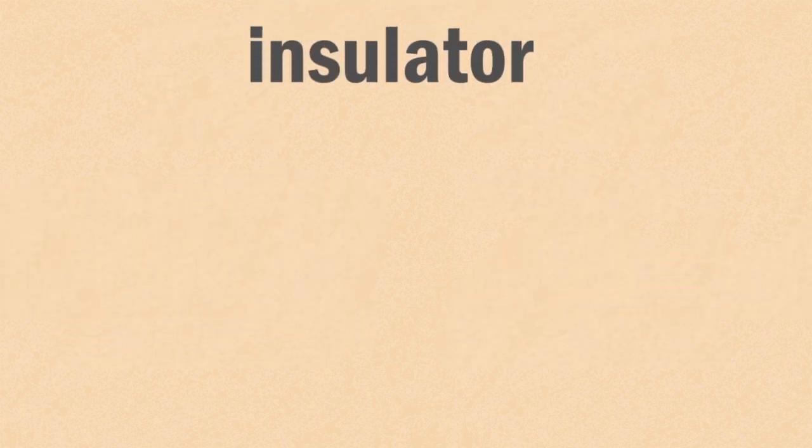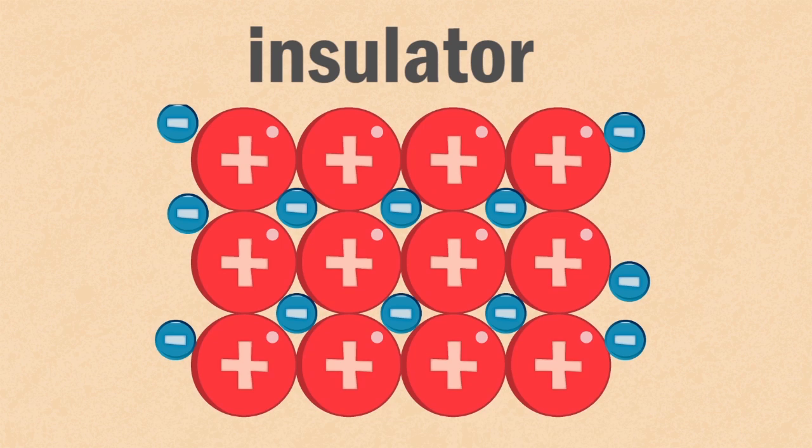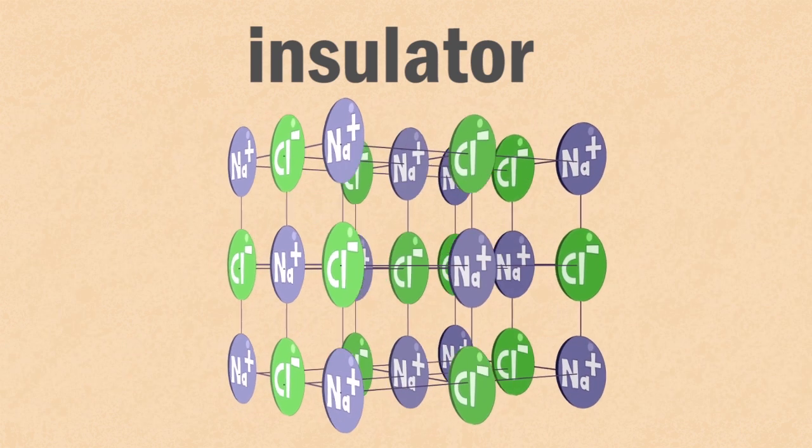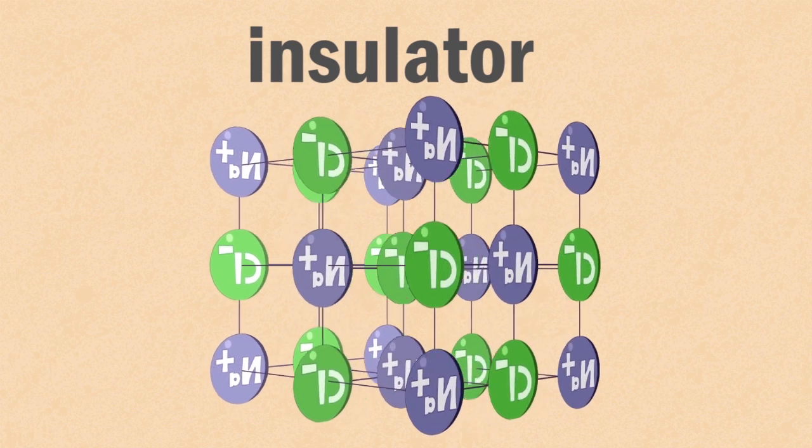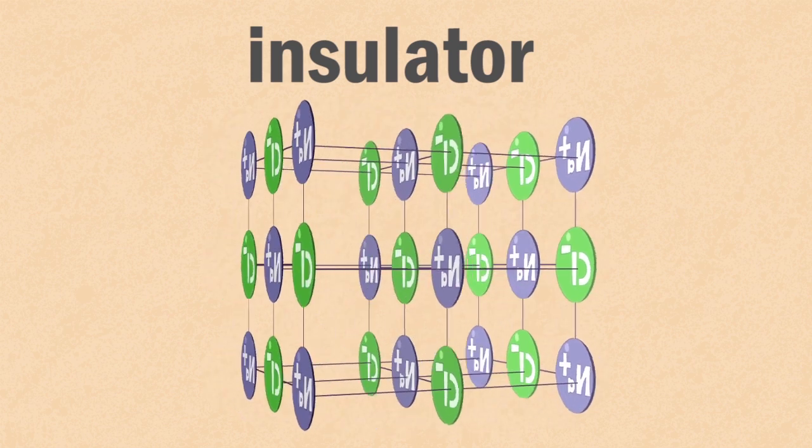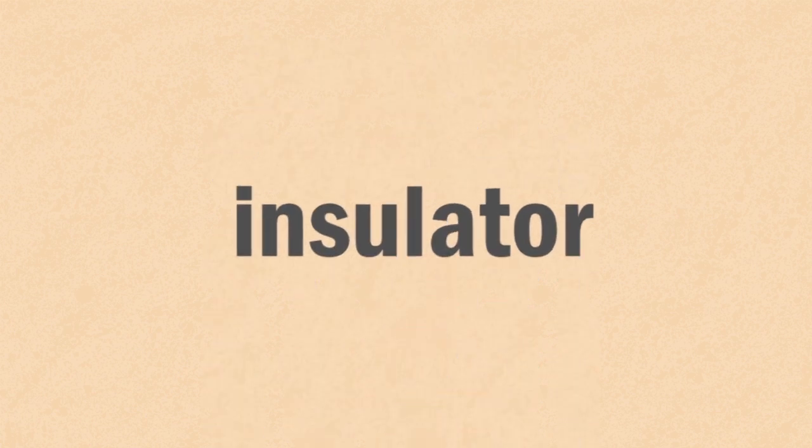In an insulator, the electrons may be more tightly bound to the atom or held in a bond or bonds. This makes them less mobile and so the electrons are not as free to move. These materials act as insulators.